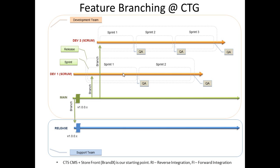Another scenario we want to touch upon is our production live website support. We always use the release branch for any production fixes. For instance, if there was a severity 1 bug reported by a user, we open up the solution from our release branch, apply a fix, and then check back into the release branch. We also deploy this fix to our UAT environment for verification and validation. After successful verification, we need to merge this fix into main and our two active development branches. This way, we can be assured that our fix is part of any current development process and won't be flagged as a bug again.